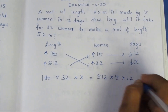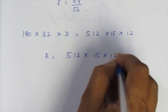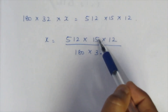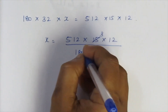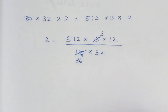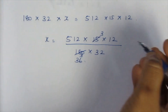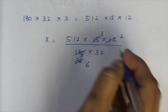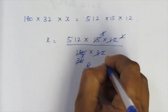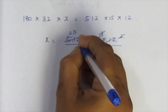x is equal to 512 × 15 × 12 divided by 180 × 32. Now let's cancel. 5 threes are 15 — balance remainder 3. 5 sixes are 30. Now using 12 tables: 6 twos are 12, 6 sixes are 36. 3 twos are 6. Cancel. Balance 2 tables: 2 ones are 2, 2 sixes are 12.